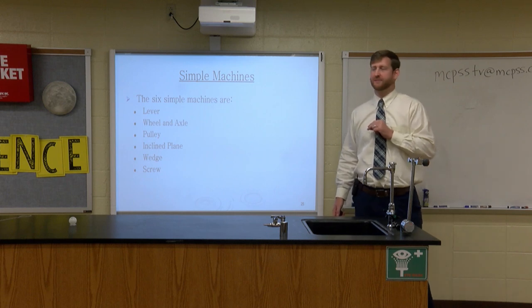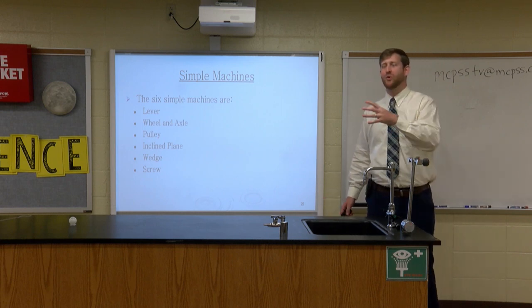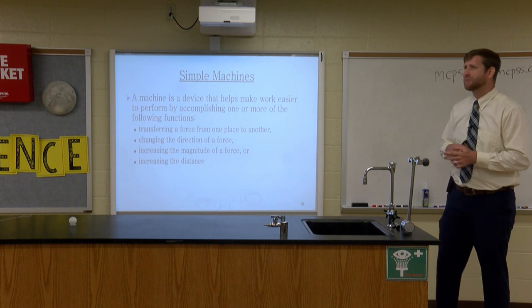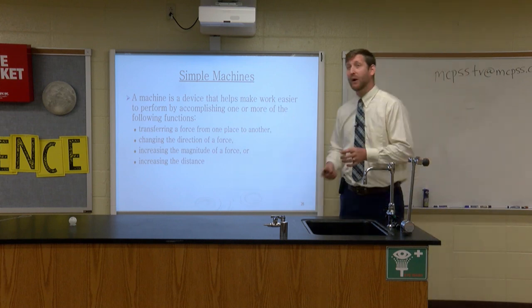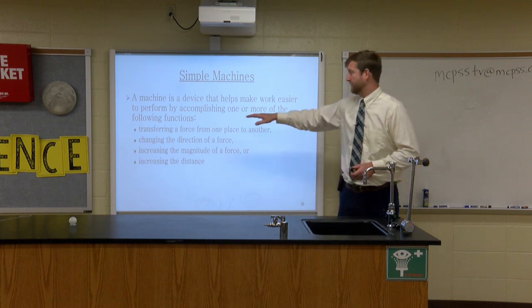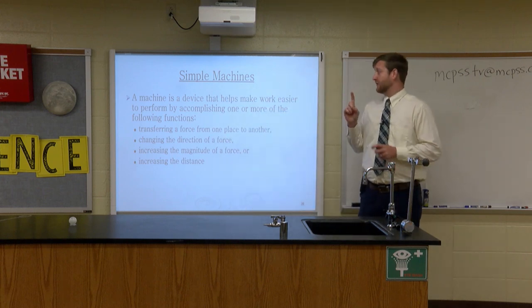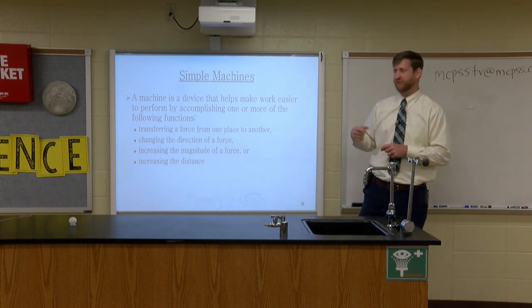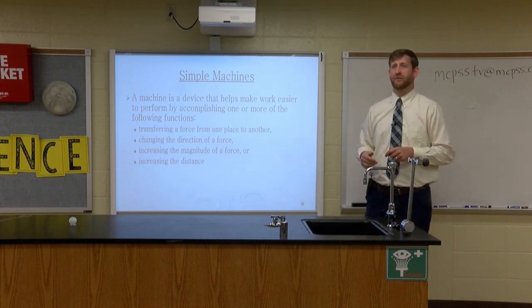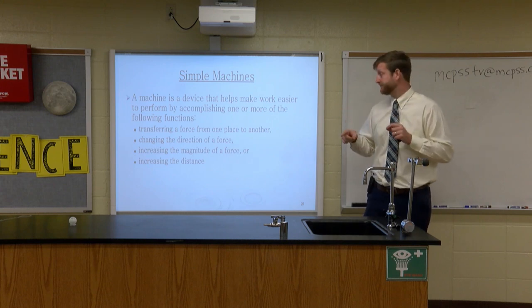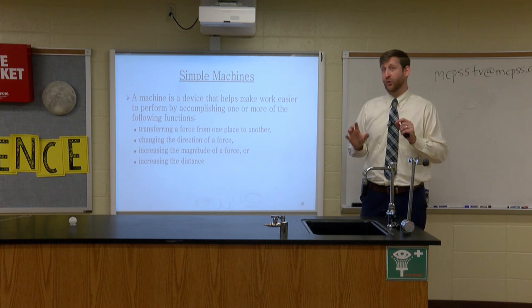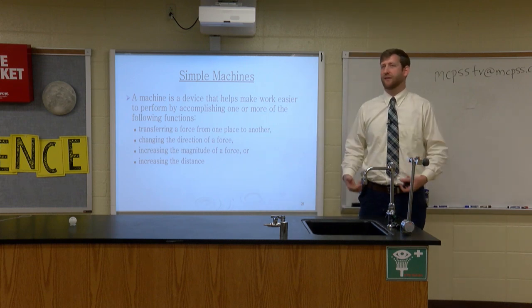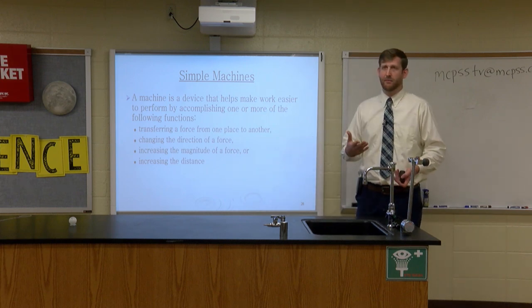A simple machine is a device that helps make work easier — it does one of four things: transferring a force from one place to another, changing the direction of the force, increasing the magnitude of force, or increasing the distance. Why would you want to walk 50 feet when you could walk 10? Well, if you can't pick an object up, then walking 50 feet on a simpler path might be worth it.